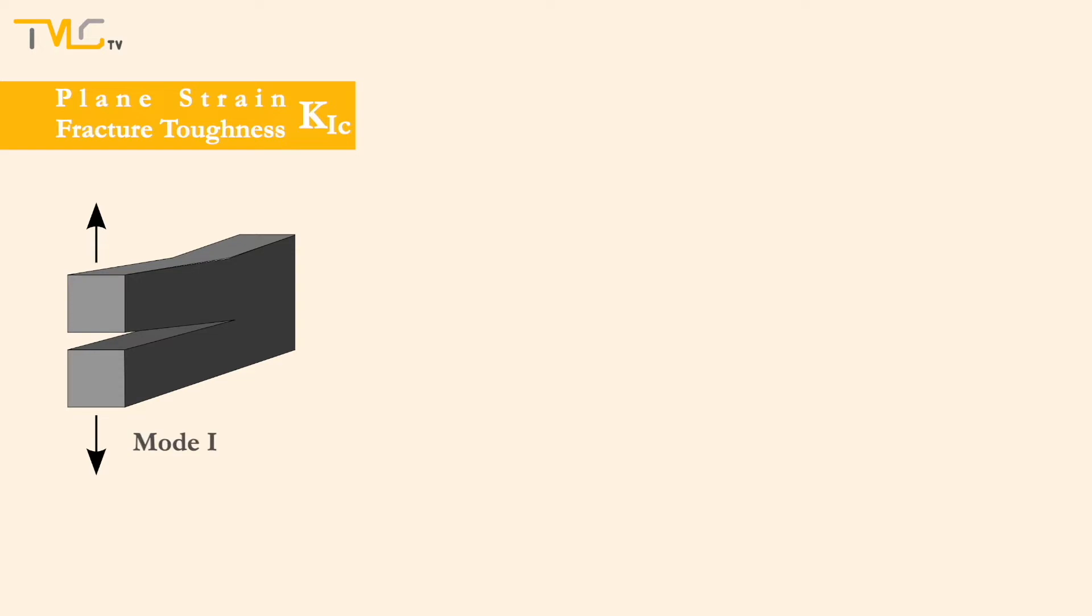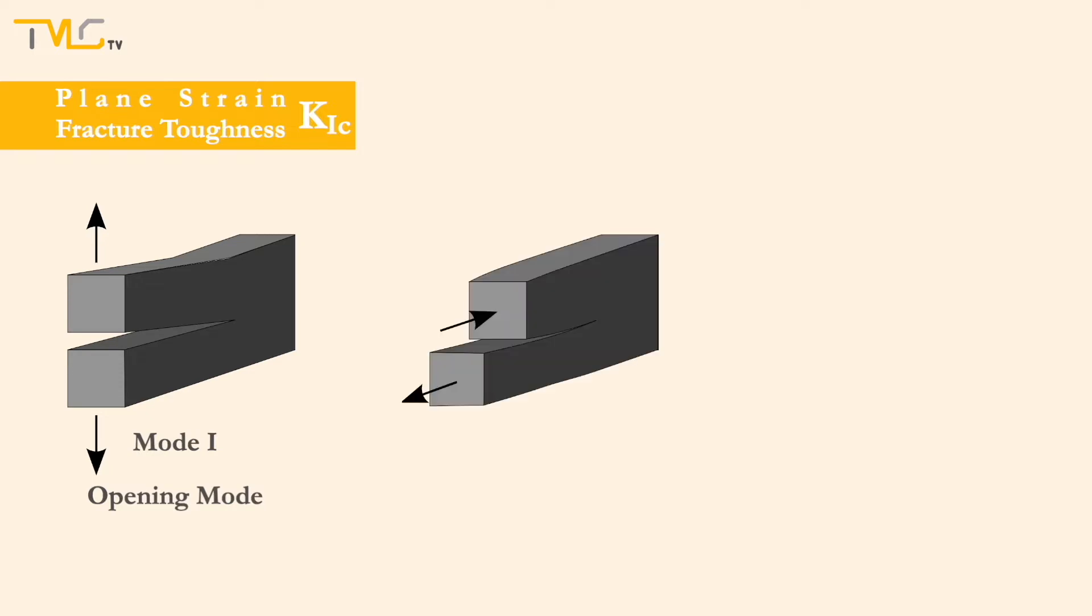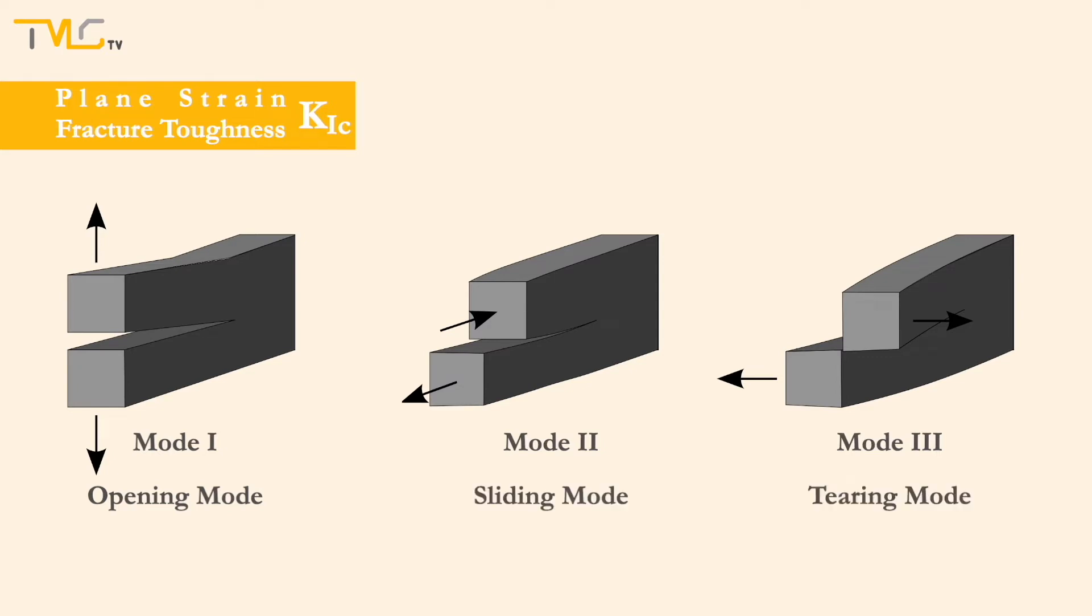One in this notation shows the mode of crack displacement, which is named as opening or tensile mode. There are also types 2 and 3 that are called sliding and tearing modes, and they won't be covered in this video.